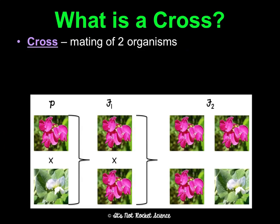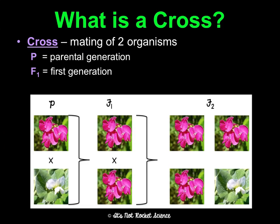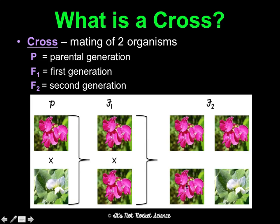A cross is a mating of two organisms. P stands for the parental generation. F1 stands for the first generation of offspring from that parental generation, and F2 is the second generation of offspring. In the parental generation, Mendel crossed a purebred purple flower with a purebred white flower, and he got all purple flowers. When he crossed two F1 plants, he consistently got three-quarters purple and one-quarter white, and this became the foundation for his inheritance laws.